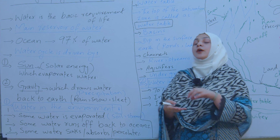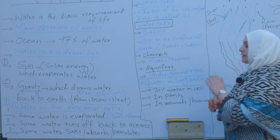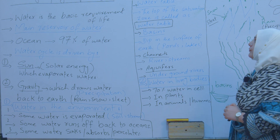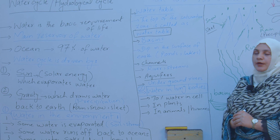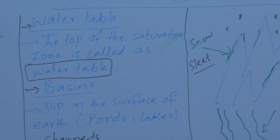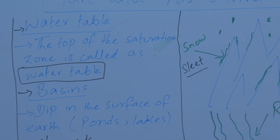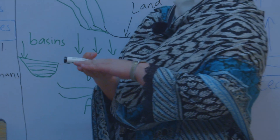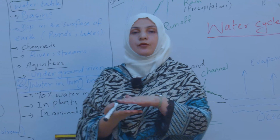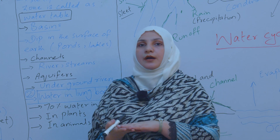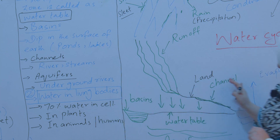Water preserved in the soil leads us to the concept of the water table. The top of the saturation zone is called the water table. The saturation zone is found underground, beneath the soil surface. The top of this underground saturation zone is basically what makes up the water table of the earth.